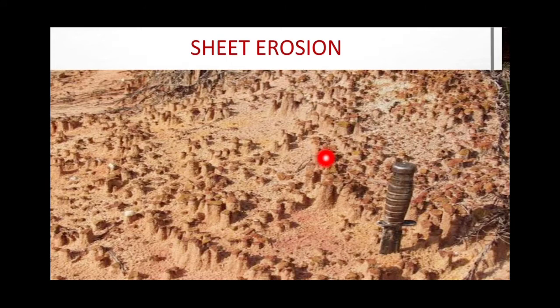The first type is sheet erosion. As you can see in the picture, the land is devoid of its top layer — the soil has been removed by running water. Due to lack of vegetation, the top layer has been removed like a sheet. This is a slow process of eating away the soil, and it is very harmful because the top layer removed is fertile.